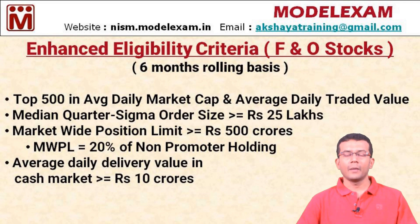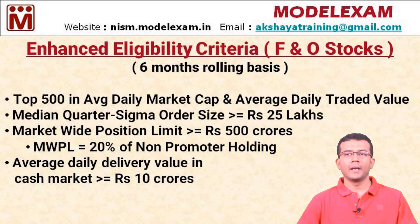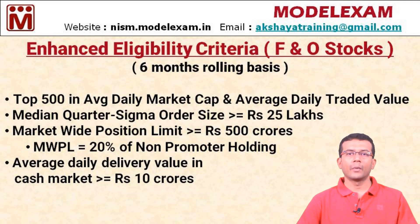The second condition is that the median quarter sigma order size should be at least 25 lakhs. We don't need to go into exactly how it is calculated — we can simply treat it as a measure of the liquidity of the stock.